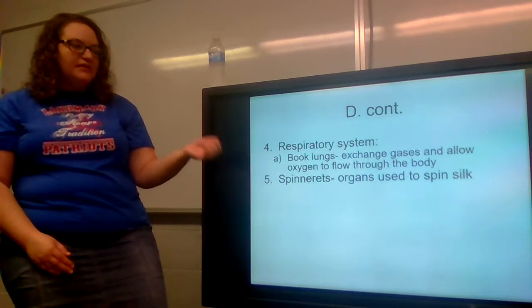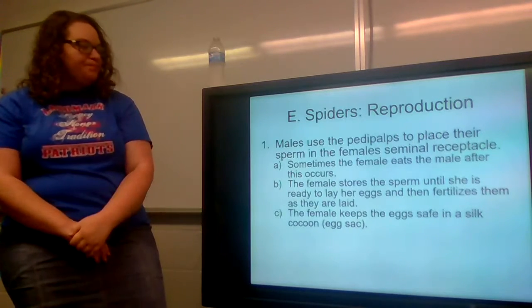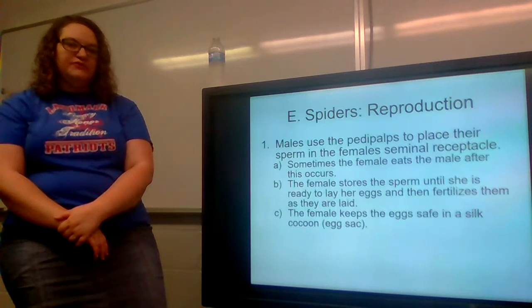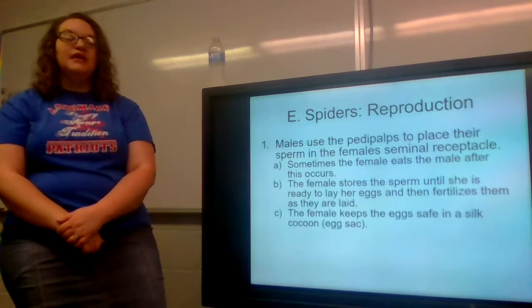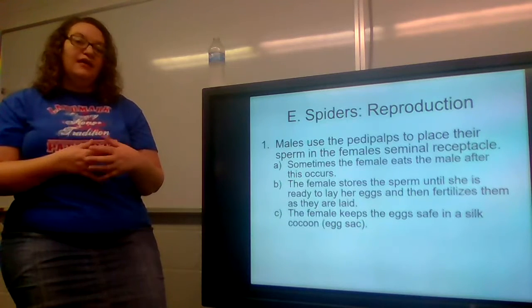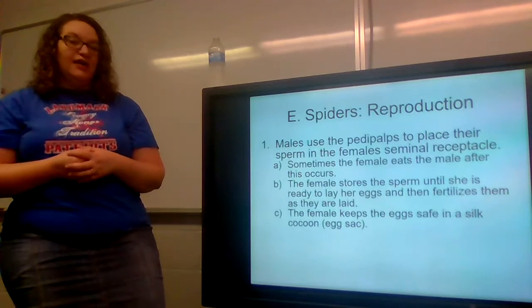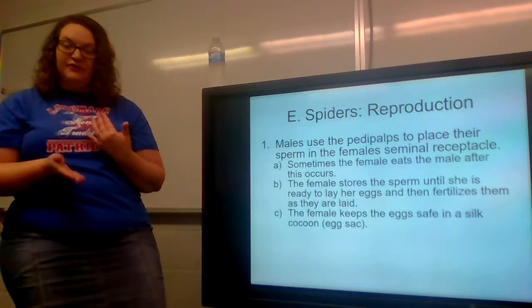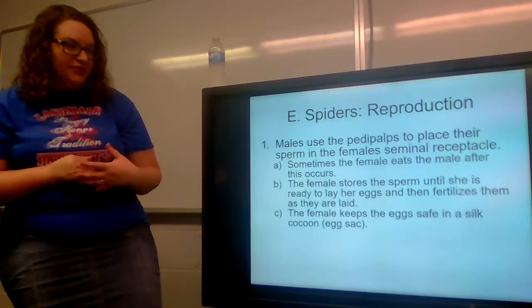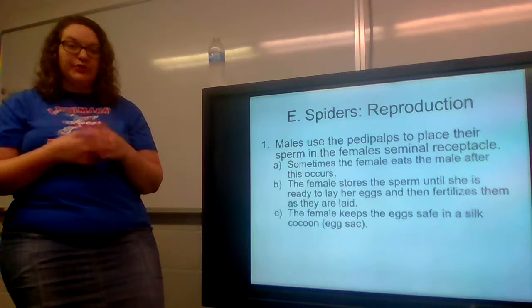They have spinnerets, which are what they use to spin their silk. The reproductive system: males use the pedipalps to place their sperm in the female's seminal receptacle, which is where the sperm waits until the female is ready to lay her eggs. Sometimes the female will eat the male after this occurs — black widows are famous for this. The female stores the sperm until she is ready to lay her eggs and then fertilizes them as they are laid, passing by that seminal receptacle to pick up the sperm.